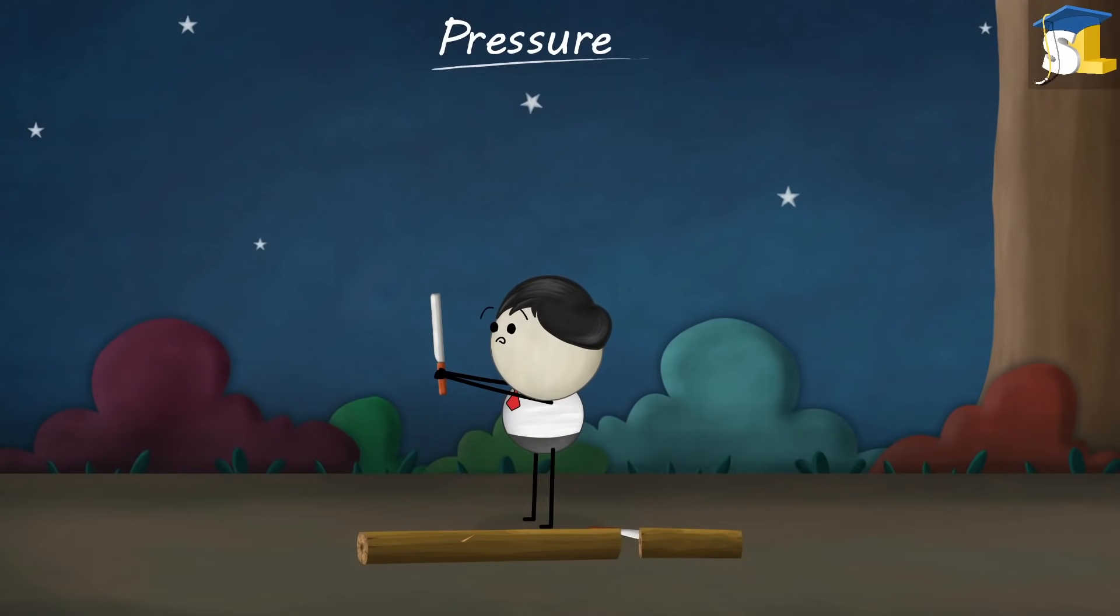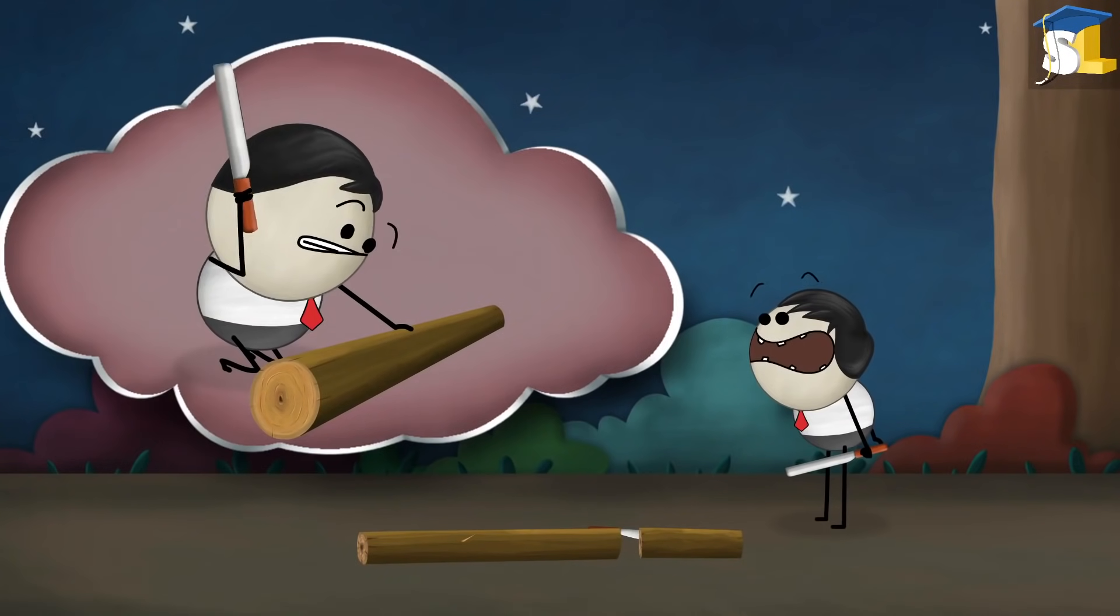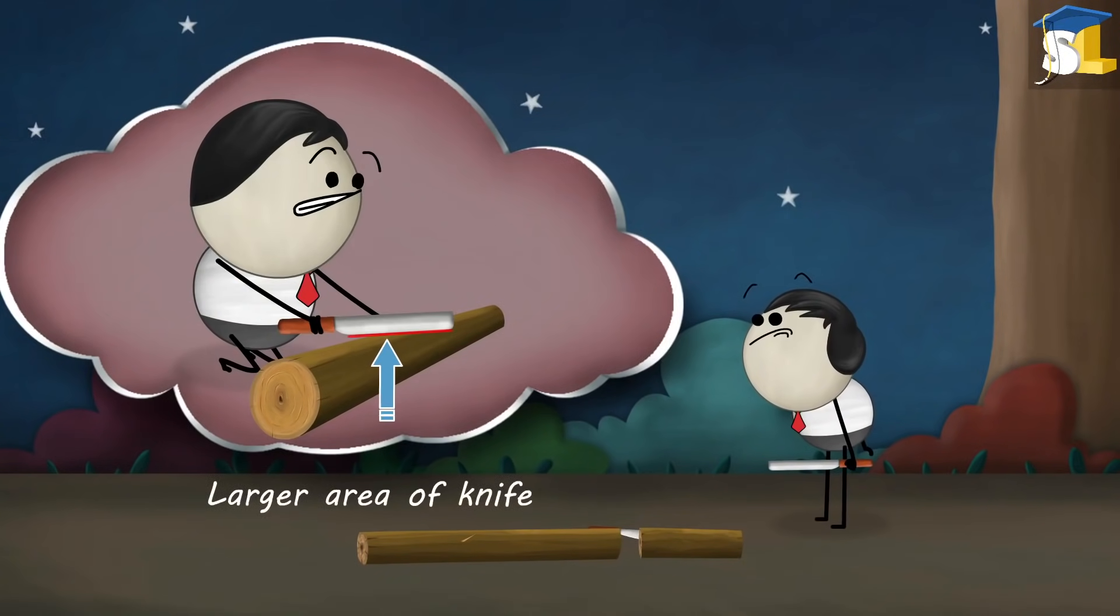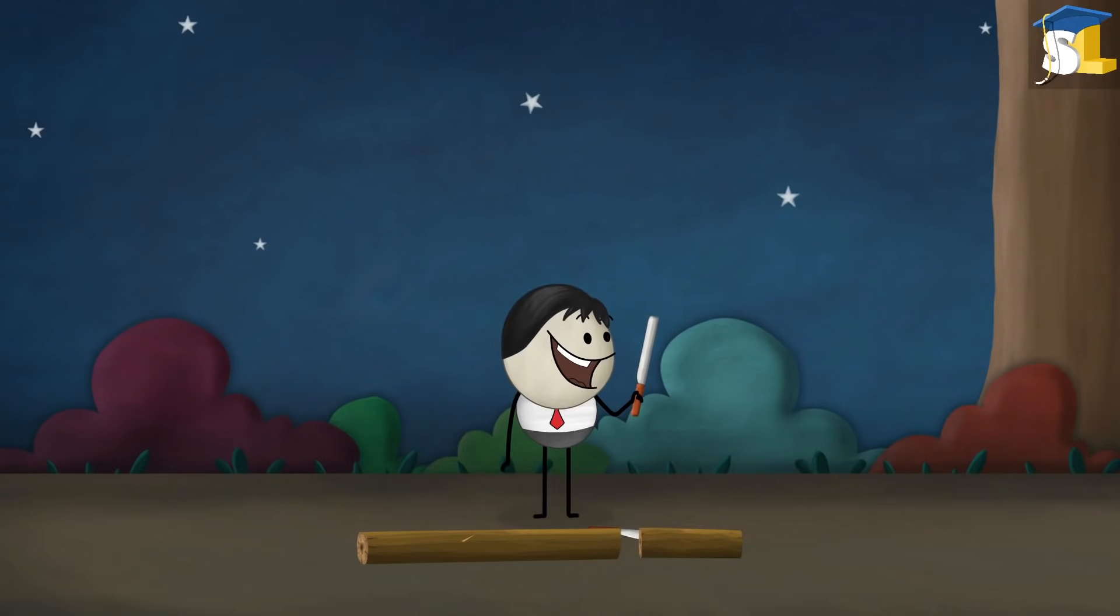In the case of a blunt knife, the cutting edge is thicker. That means the area is larger. As a result, the force of our hand falls over a larger area of the knife, producing less pressure. Hence, it is difficult to cut with a blunt knife.